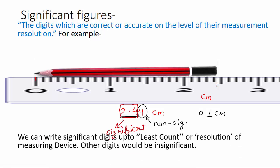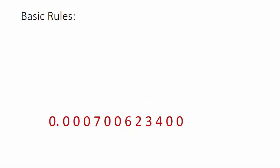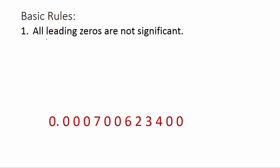So we can write significant digits up to the least count or resolution of the measuring device; other digits would be insignificant. Rule 1: all leading zeros are not significant. Leading zeros means the zeros at the starting of the number. So all these zeros at the starting of the number are non-significant.